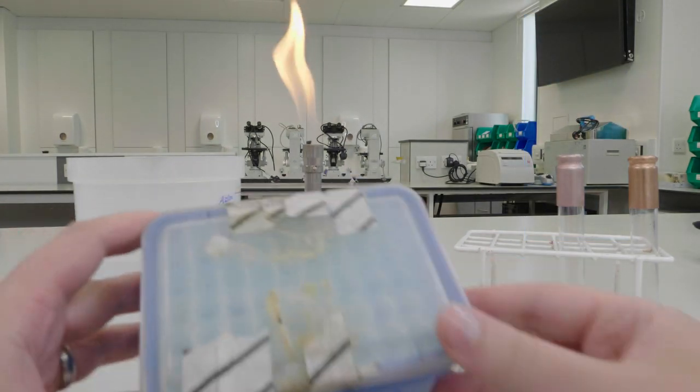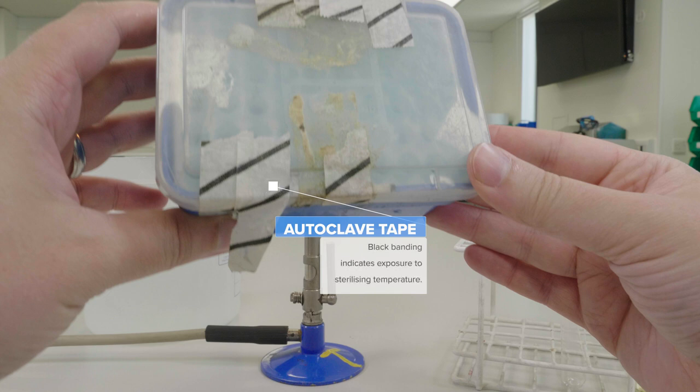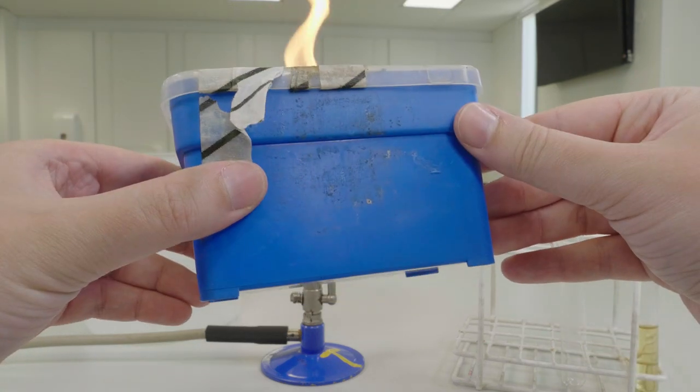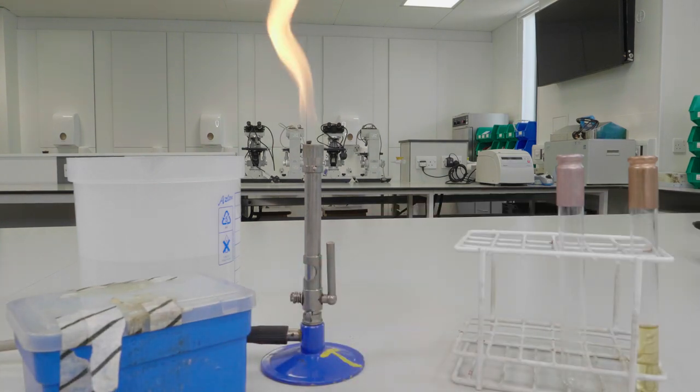You also need some sterile pipette tips. You can tell your tips have been sterilised as they will have some autoclave tape stuck on them. Do not use tips if they don't have autoclave tape on them. They might not be sterile and could end up contaminating your work with environmental organisms.